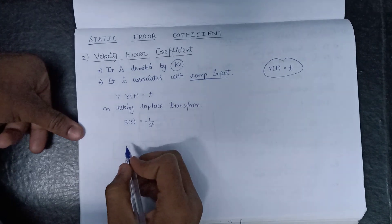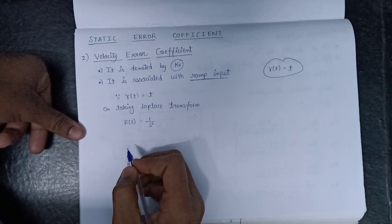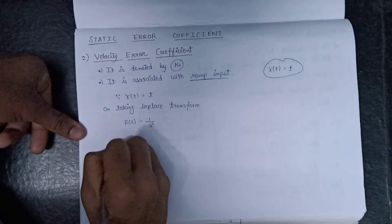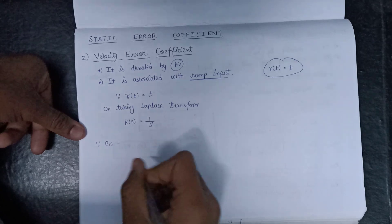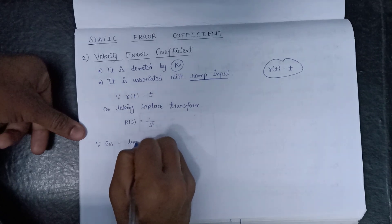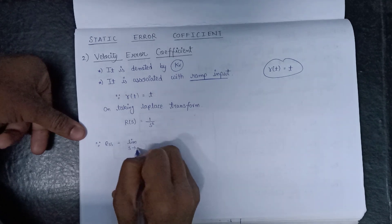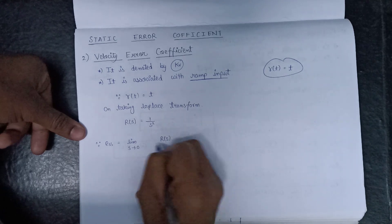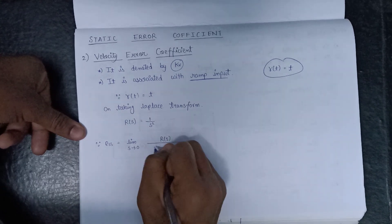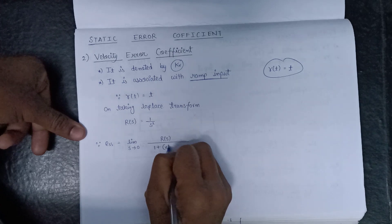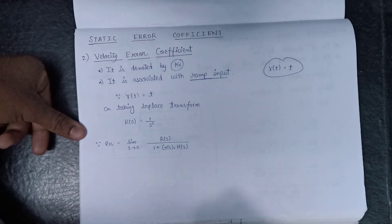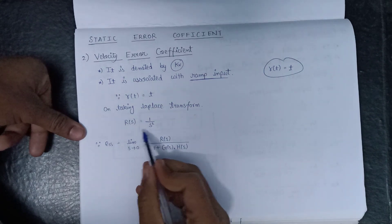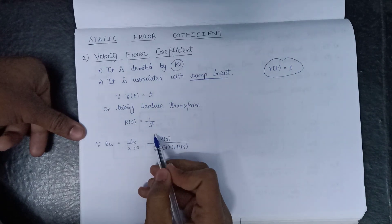Since we derived the equation for steady state error, that is E(s) is nothing but equals to limit s tends to 0 R(s) over 1 plus G(s) into H(s). And we have R(s) value as 1 over s square.